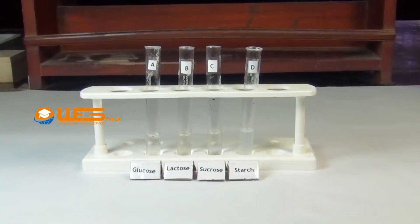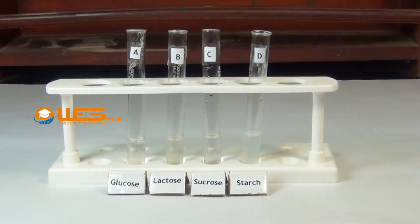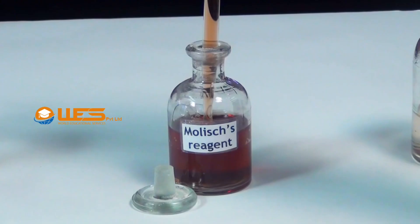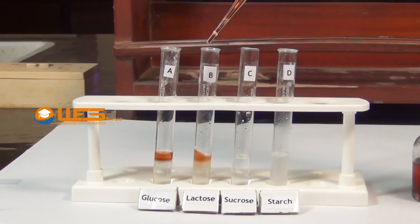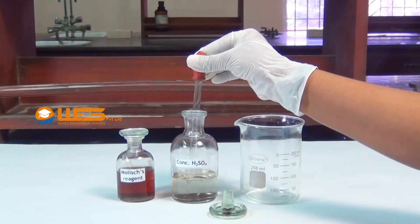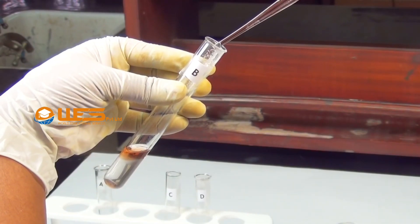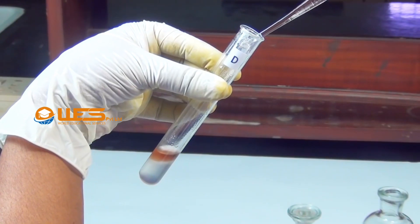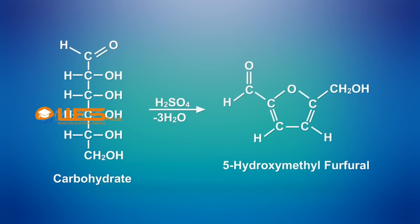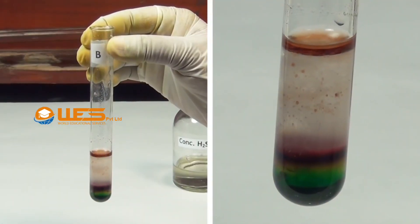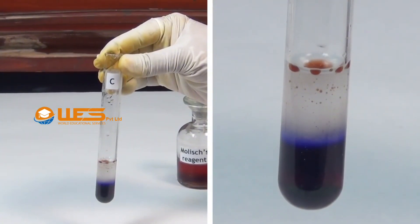Molisch Test. Take a small quantity of aqueous solutions of glucose, lactose, sucrose and suspension of starch in four test tubes A, B, C and D respectively. Using a dropper, add a few drops of Molisch reagent to each test tube. Then pour a small amount of concentrated sulphuric acid slowly along the side of each test tube. Concentrated sulphuric acid dehydrates carbohydrates to form furfuraldehyde or its derivative, which further reacts with alpha-naphthol present in the Molisch reagent to form a coloured product that appears as a purple ring at the interface between the acid layer and the test layer.